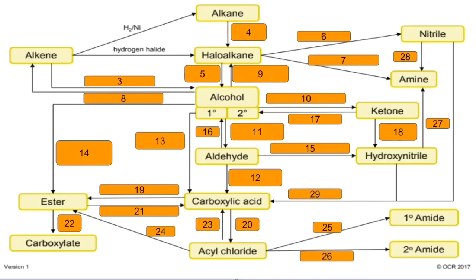Number three: alkene to alcohol — you need to react the alkene with steam, so the temperature needs to be above 100 degrees C and you would use a phosphoric acid catalyst. Number four: alkane to haloalkane — you react the alkane with a halogen and it must be in the presence of UV light.